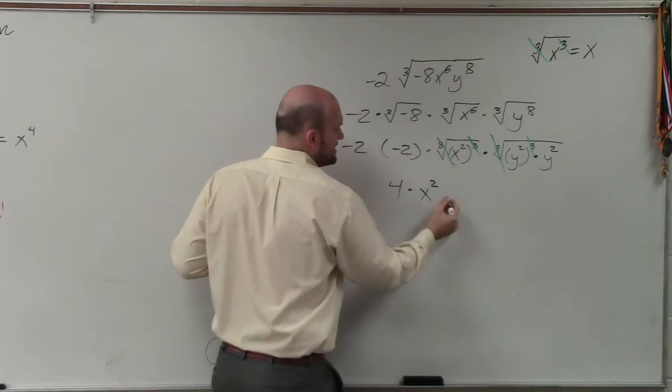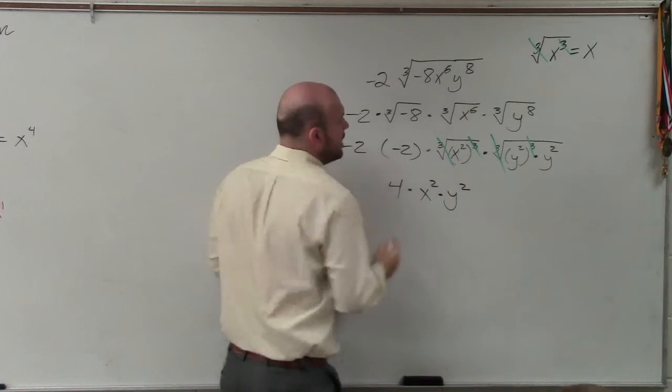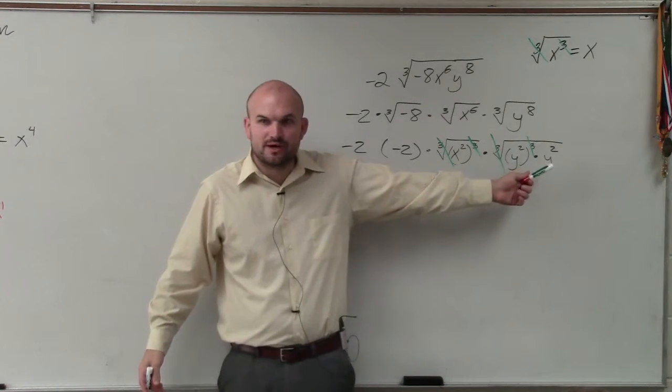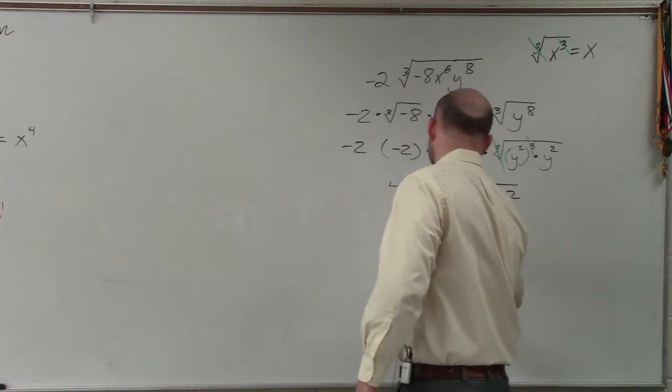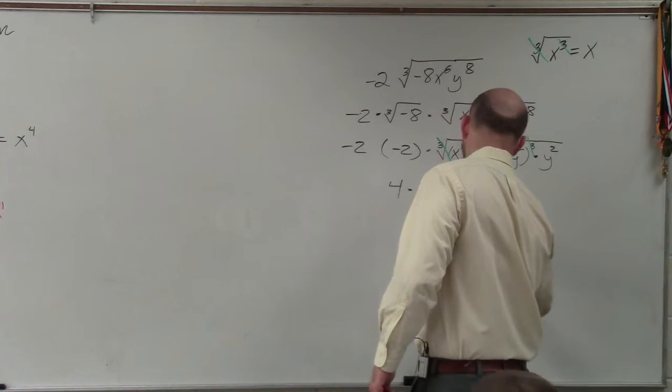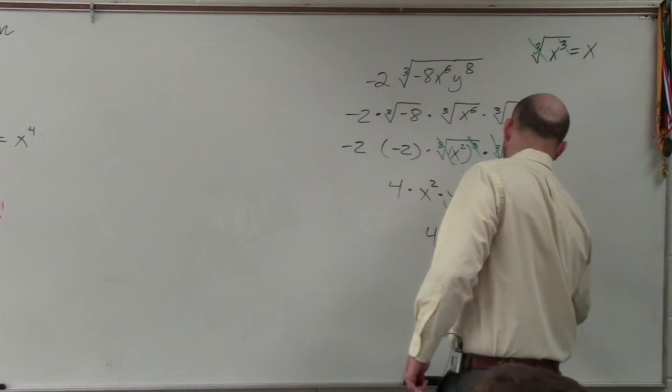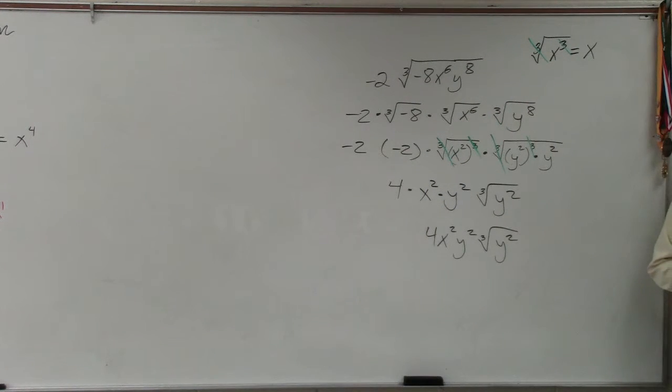Here, I have y squared out. However, can you take the cube root of that y squared? So that's going to remain under the radical. So your final answer is 4x squared y squared times the cube root of y squared. And that's going to be your final answer.